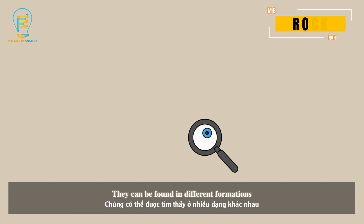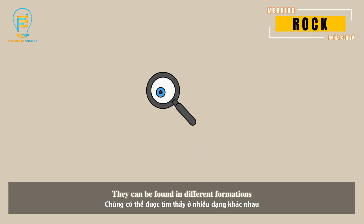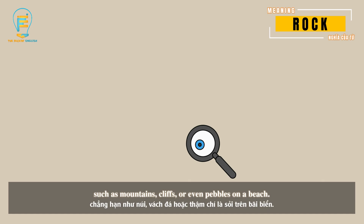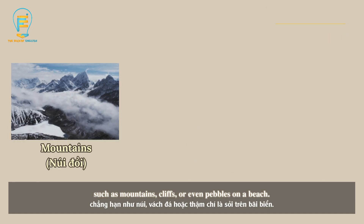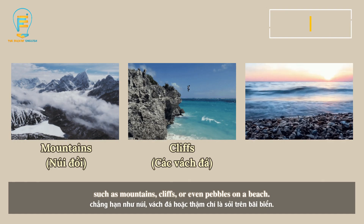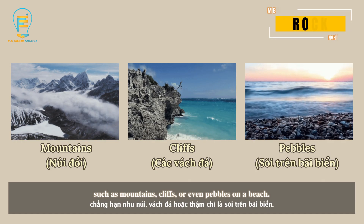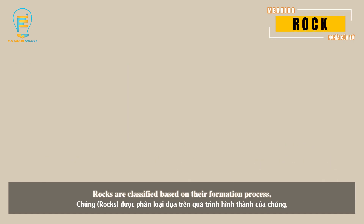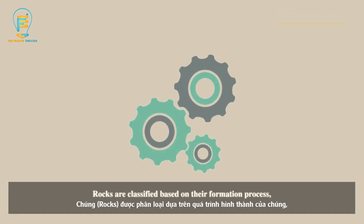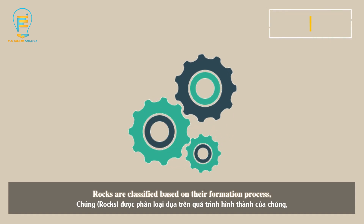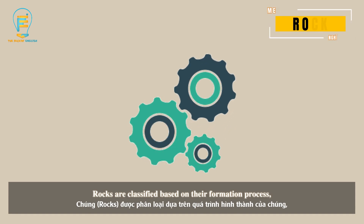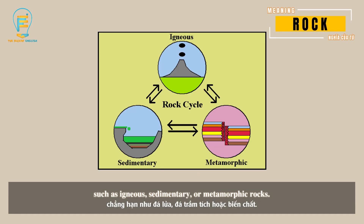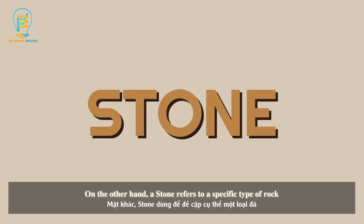They can be found in different formations such as mountains, cliffs, or even pebbles on a beach. Rocks are classified based on their formation processes, such as igneous, sedimentary, or metamorphic rocks.